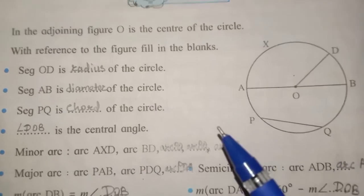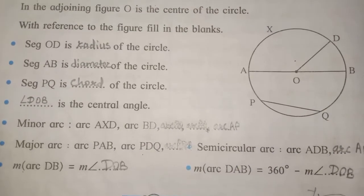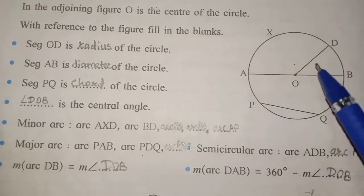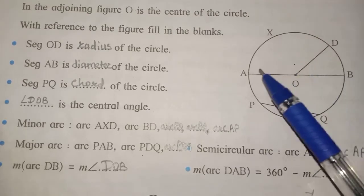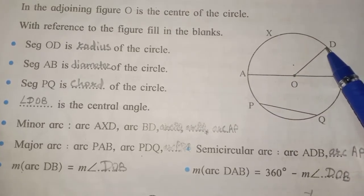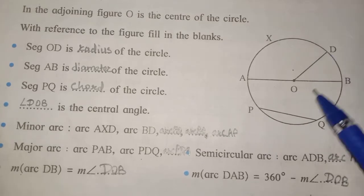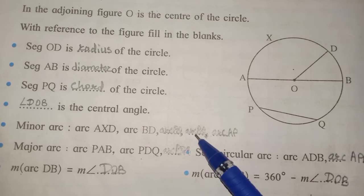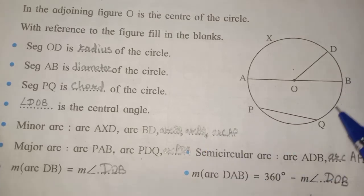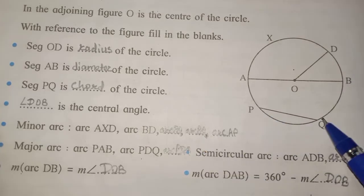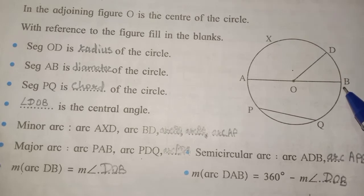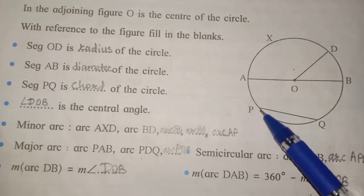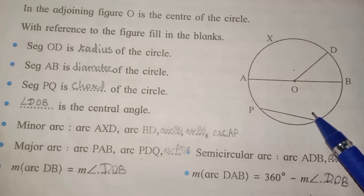Minor arcs: arc AXD, arc PQ, arc BQ, and arc AP. These are the minor arcs — meaning less than half circle.